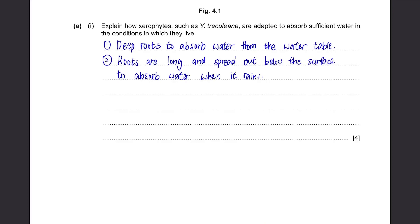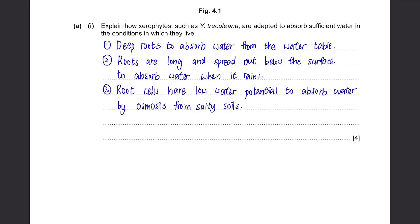To add on, the root cells will generally have low water potential so that they can absorb water by osmosis even though the soils are very salty. Lastly, the roots branch many times and they have lots of root hairs, so this will give a large surface area and thus have high rates of absorption of water.